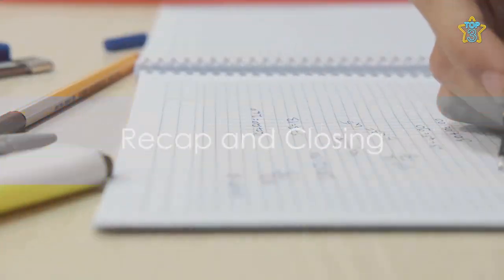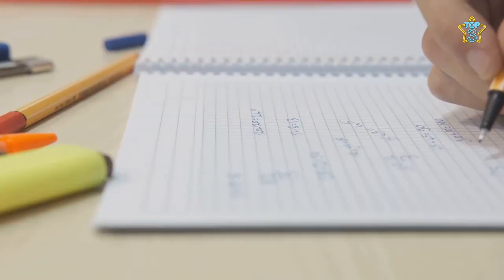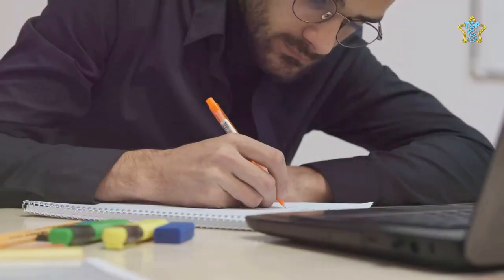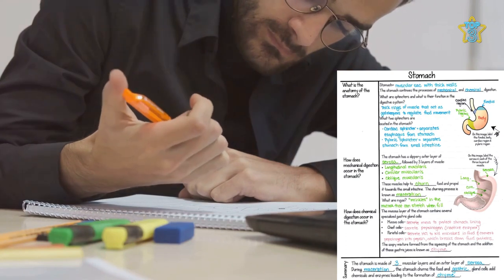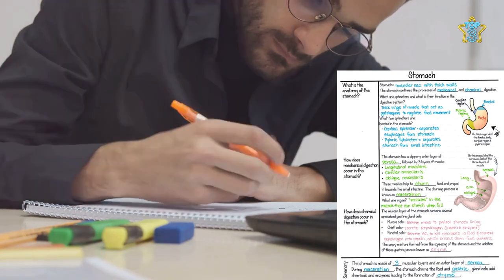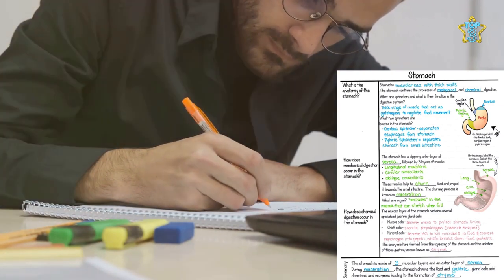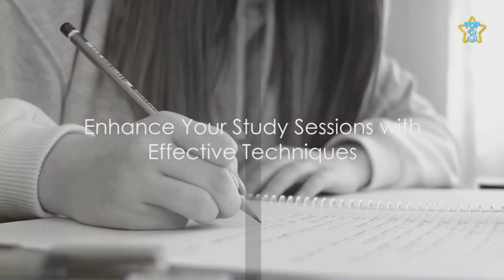So there you have it. Three effective note-taking techniques to make your study sessions a breeze. We kick things off with the Cornell note-taking technique, a savvy system that splits your page into three sections for cues, notes, and summaries. It's like a three-course meal for your brain, but with zero calories.